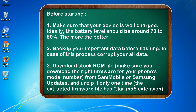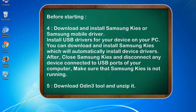Before starting: 1. Make sure that your device is well charged — ideally the battery level should be around 70 to 80%, the more the better. 2. Back up your important data before flashing in case the process corrupts your old data. 3. Download the stock ROM file and make sure you download the right firmware for your phone's model number from Sammobile or Samsung updates, and unzip it only one time. The extracted firmware file has a .tar.md5 extension.